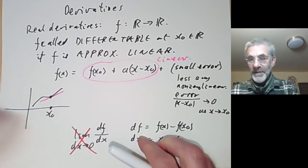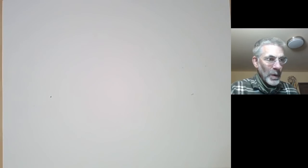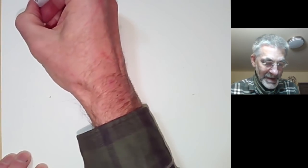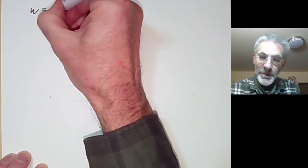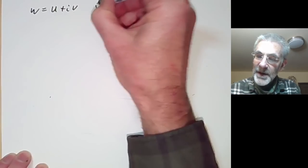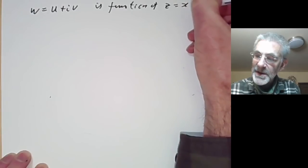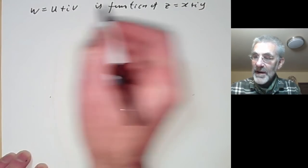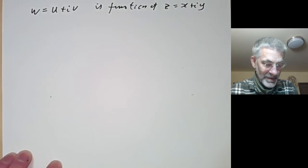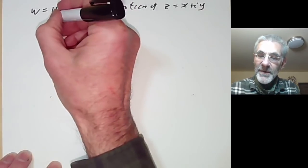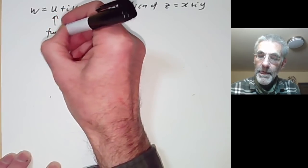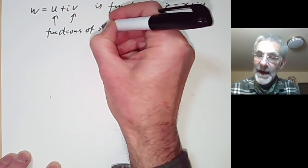So that's what real derivatives are like. Now we're going to look at real derivatives of complex functions. Here we're going to take w equals u plus iv as a function of z which equals x plus iy. So u and v and x and y are just real variables, and these are both functions of the real variables x and y.